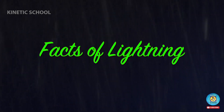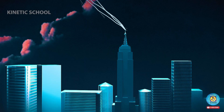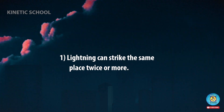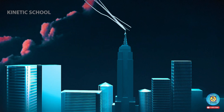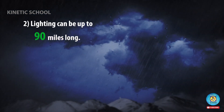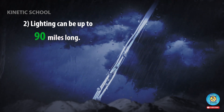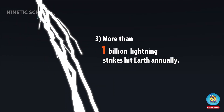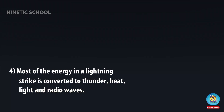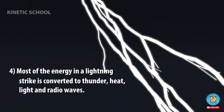Facts of lightning: lightning can strike the same place twice or more. Lightning can be up to 90 miles long. More than one billion lightning strikes hit Earth annually. Most of the energy in a lightning strike is converted to thunder, heat, light, and radio waves.